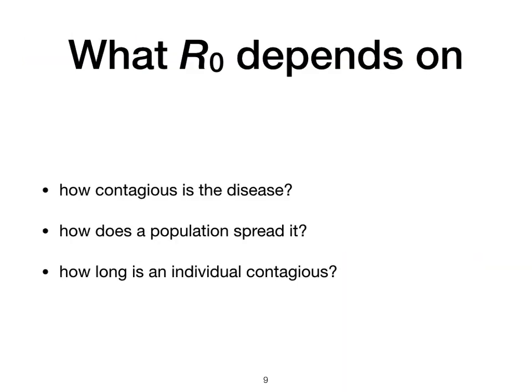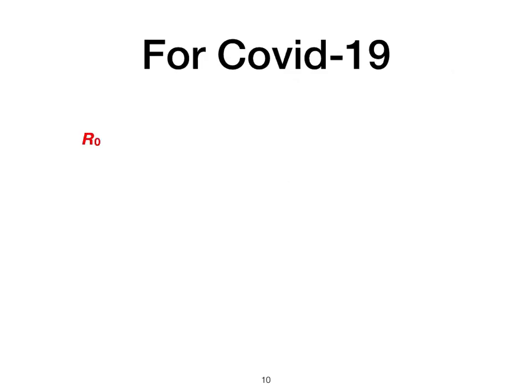Let's see where R0 comes from. First, it's a property of the disease — how contagious is it? Second, it depends on how the population tends to mix: is it a population where people mix a lot socially? There are other factors as well, like personal hygiene, how people cough, whether people wear masks routinely, and how long a particular individual is contagious. Let's look at how this works out for COVID-19.